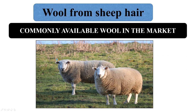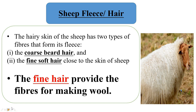Commonly available wool in the market is sheep wool, so we will study sheep wool in further detail. Sheep has two types of hair: coarse beard hair and fine soft hair present close to the skin. The wool we obtain is from the fine hair, not the coarse beard hair — the fine hair provides the fibers for making wool.